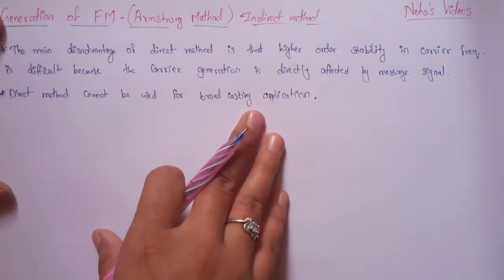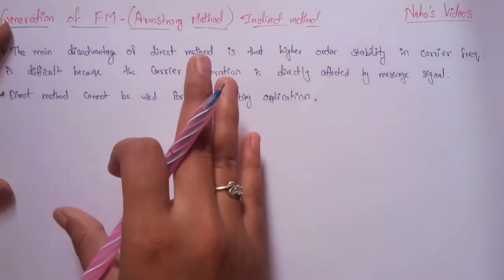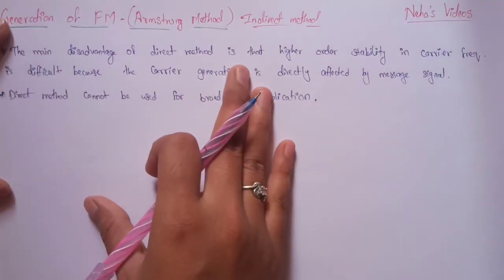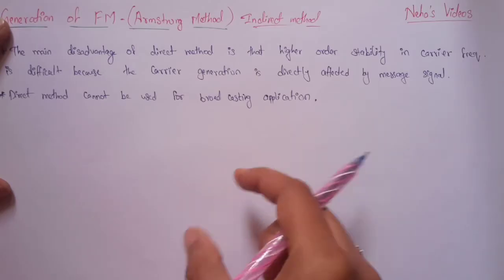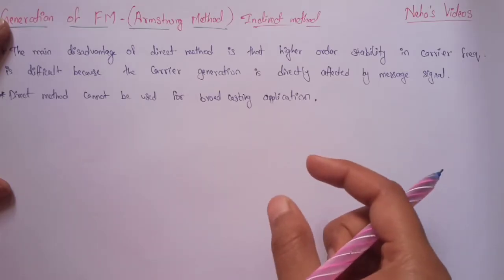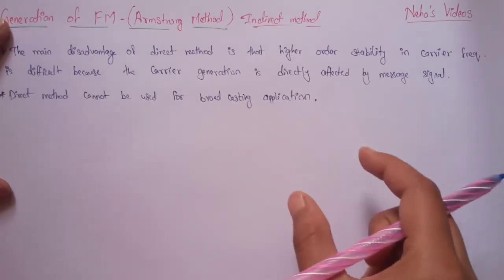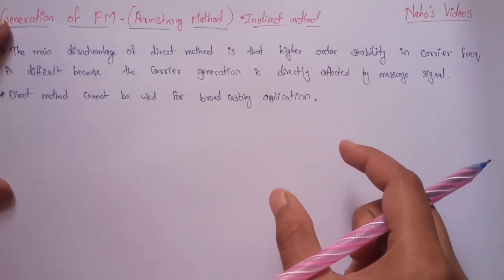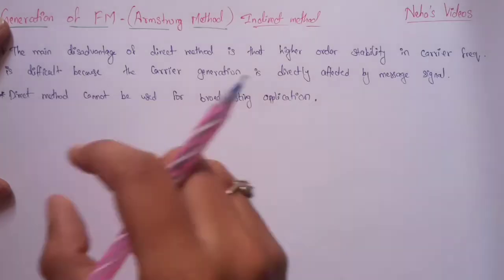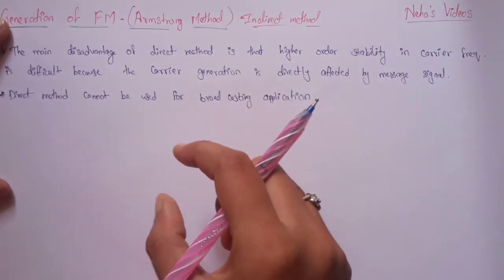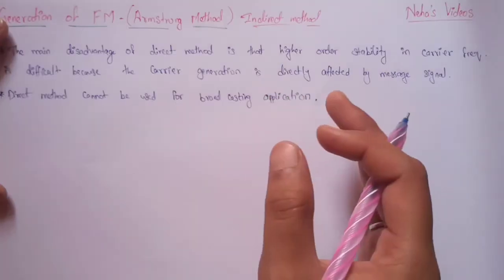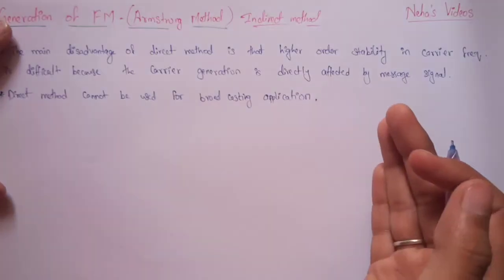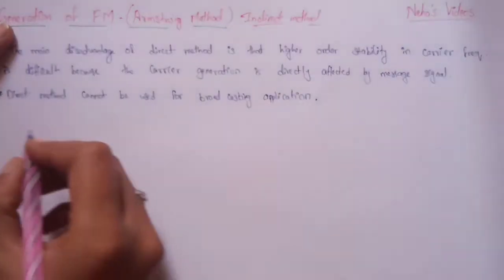The direct method cannot be used for broadcasting systems. In the indirect method, the narrow band frequency is indirectly generated using the phase modulation technique, and this narrow band FM signal is further converted into wide band FM using a frequency multiplier. Let me explain what narrow band and wide band frequency mean.